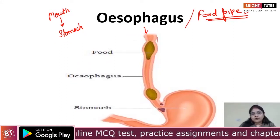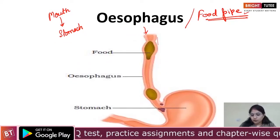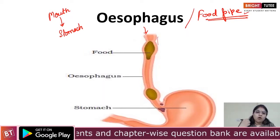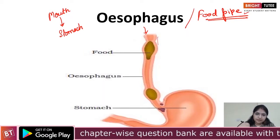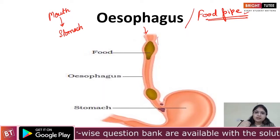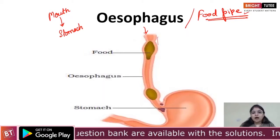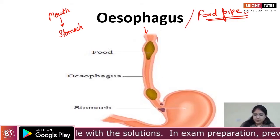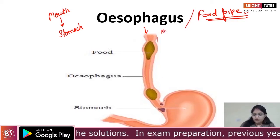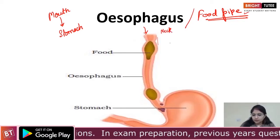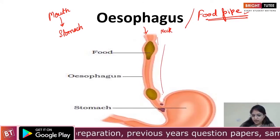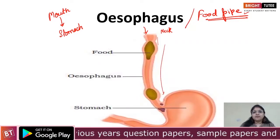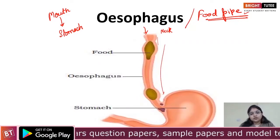Where is the location of the food pipe? The food pipe runs along the neck and goes down up to the stomach. As you can see, it runs from along the neck, through your chest, and then down towards your stomach.